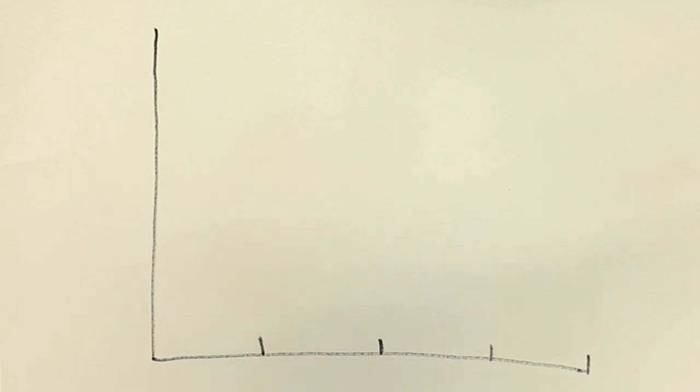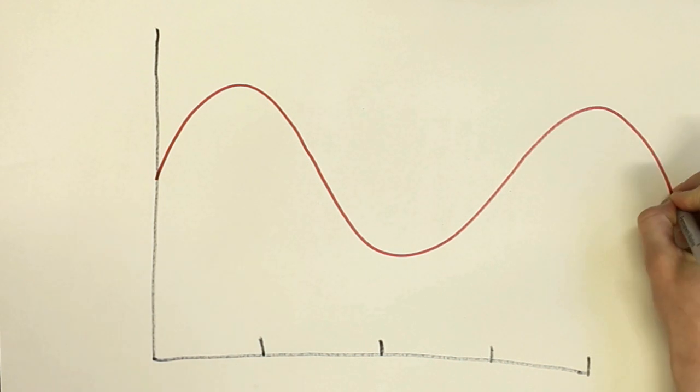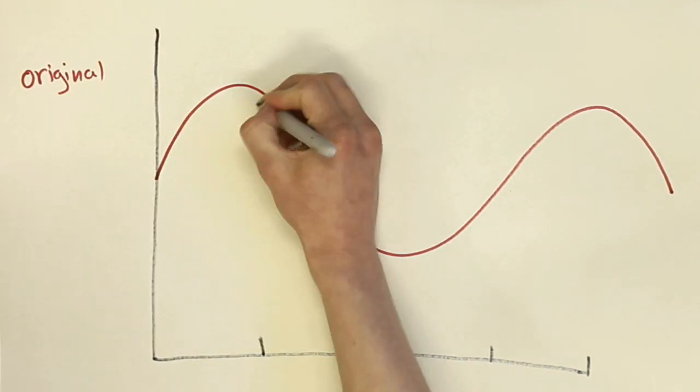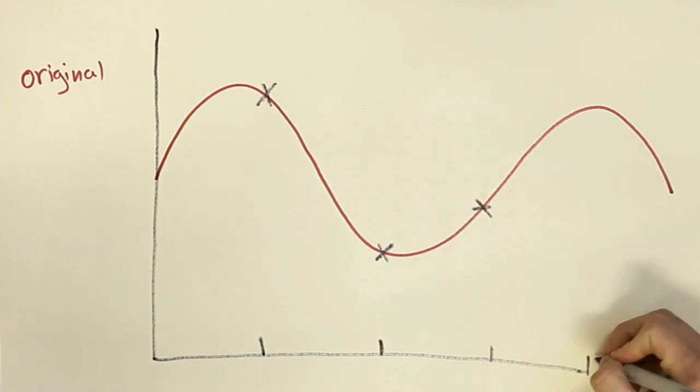This theorem was laid out long before digital equipment even existed, and is really important in digital audio. The theorem basically lays out a simple rule for sampling rate to avoid aliasing. The rule is that the rate of sampling must be at least double the rate of the highest frequency which is going to be sampled. This is known as the Nyquist frequency.